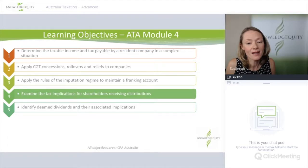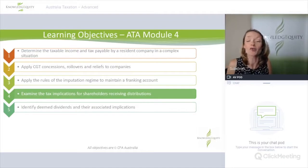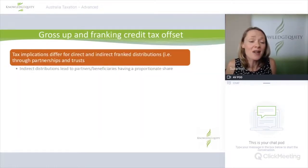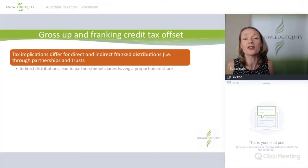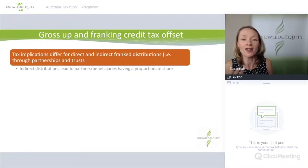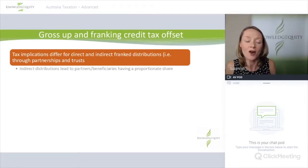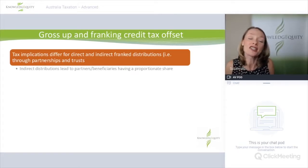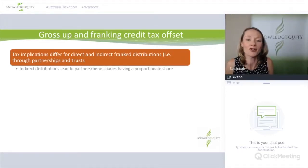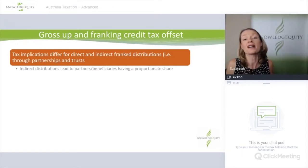Now let's have a quick look at the tax implications for shareholders receiving distributions. When a shareholder receives a frank distribution, they have to gross up the distribution to take into account any franking credits attached, which becomes assessable income. They may then access the franking credit tax offset, which reduces their overall tax payable. The tax implications are a little different if the ultimate shareholder receives dividends through a partnership or trust — these are indirect distributions — and generally the distribution will be grossed up at either the trust or partnership level.